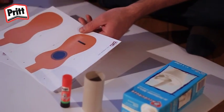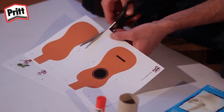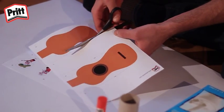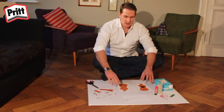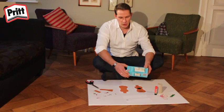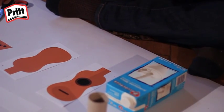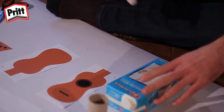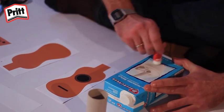Knip alle afbeeldingen uit de afdrukken die je hebt gedownload op de PritWorld website. Als je alles hebt uitgeknipt zijn we klaar om de plaatjes op de doos te lijmen. Dit doen we met onze handige lijmstift. Gebruik flink veel lijm zodat alles goed blijft zitten.